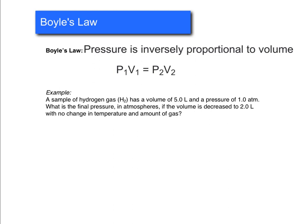Alright, so our initial pressure and volume are 1.0 atmospheres and 5.0 liters. So that's our P1 and our V1. And then it says what is the final pressure, in atmospheres if the volume is decreased to 2 liters with no change in temperature or amount of gas. So this tells us that P2 is what we're trying to find, that's our X. And V2 is 2.0 liters.